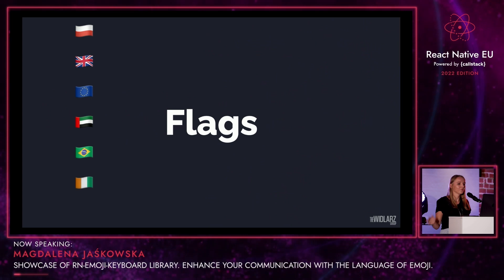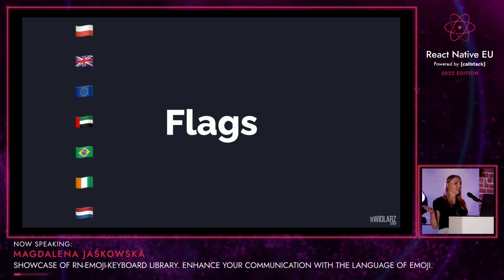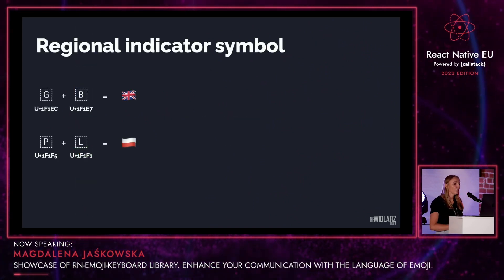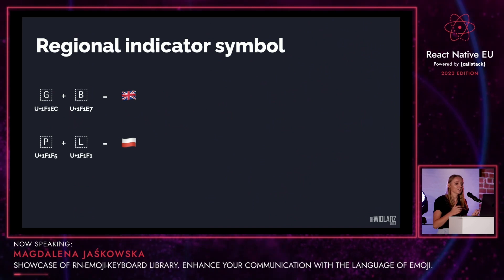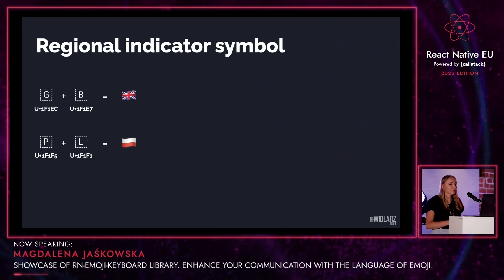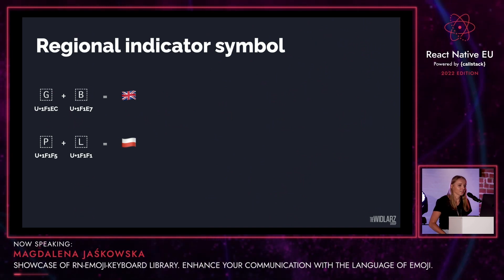Let's talk flags. As mentioned before, every emoji should have its dedicated code point. But this is not the case for flags. They are so-called flag sequences combining regional indicator symbols — for example, PL, GB, and so on. Each of these regional indicator symbols combined together create a country flag.